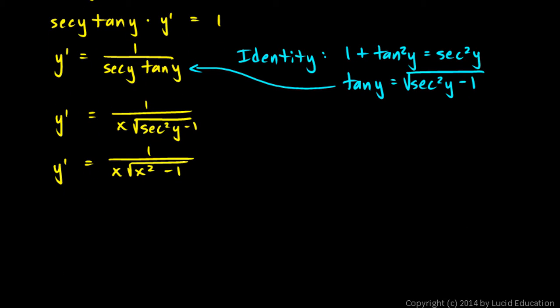Now, the problem here is there's really a plus or minus in here. When we take the square root, we really get a plus or minus. So what about the plus or minus? That's our question here, and this is the tricky part.